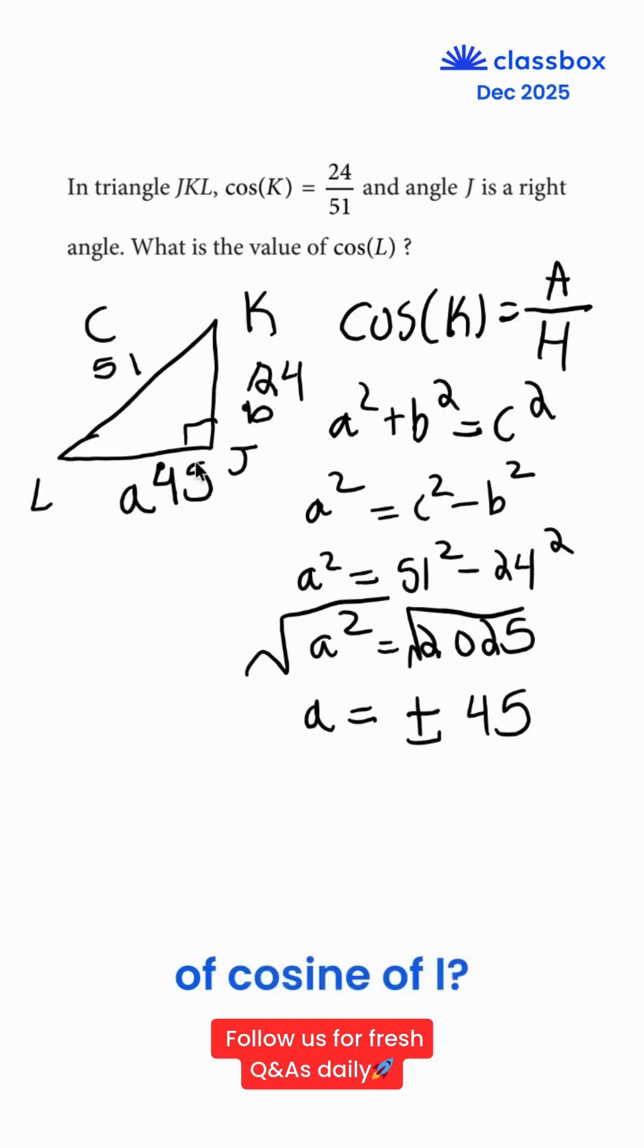So what is the value of cosine of L? Cosine of L would be your adjacent, which is 45, over our hypotenuse, which is 51. 45 over 51, which can be simplified by dividing by 3 to 15 over 17.